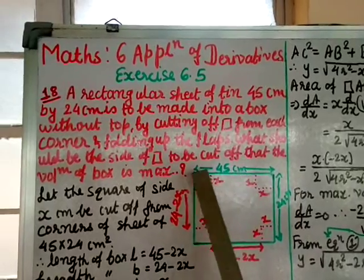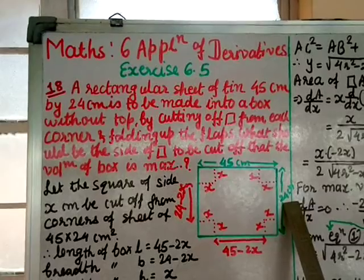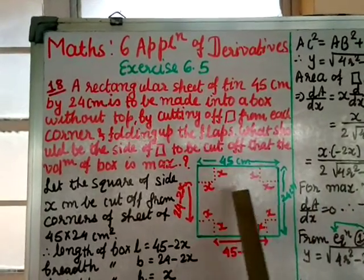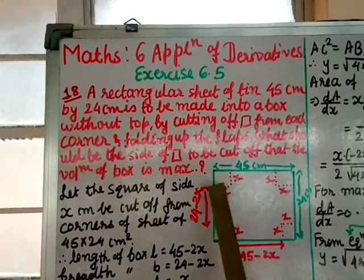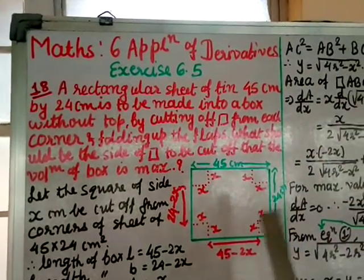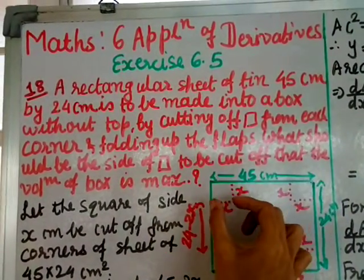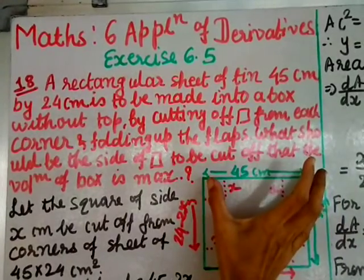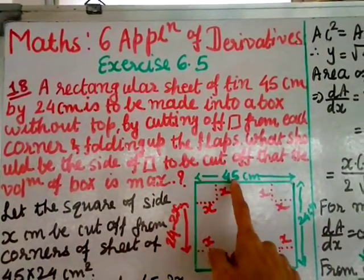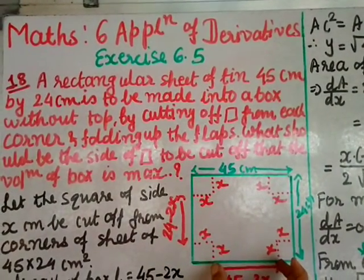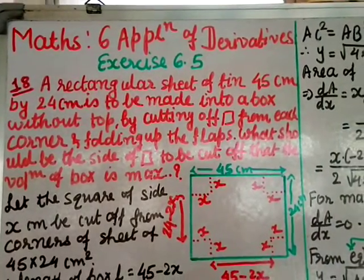We have a rectangular sheet with length 45 cm and width 24 cm. We are going to cut a square of x cm from all four corners. When we cut, this removes x from each end of the length.